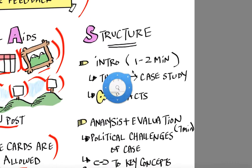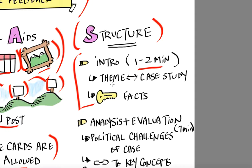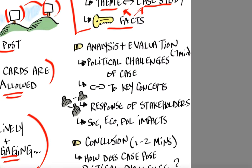For structure: the intro should be about one to two minutes, where you're introducing the theme, the case study, and some key facts about it. The second part — the main part — is the analysis and evaluation, which is about seven minutes long. You should be looking at the political challenges of the case, links to key concepts, different perspectives, response of stakeholders, and the social, economic, and political impacts of the case study.